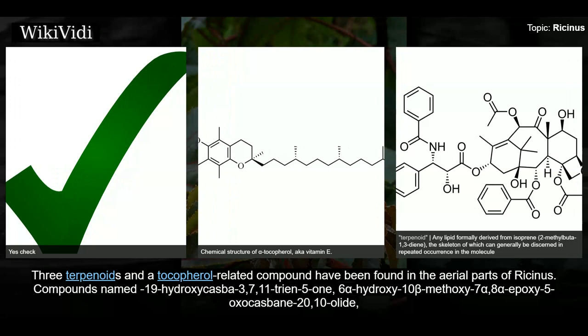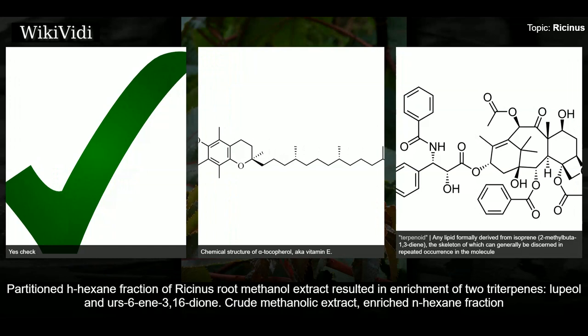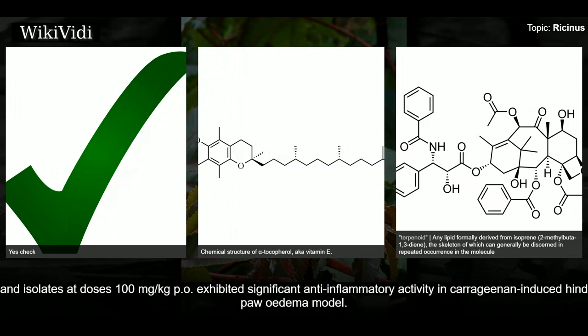Three terpenoids and a tocopherol-related compound have been found in the aerial parts of Ricinus. Various named compounds were isolated from the methanol extracts of Ricinus communis by chromatographic methods. Partitioned n-hexane fraction of Ricinus root methanol extract resulted in enrichment of two triterpenes, lupeol and urs-6-en-3,16-dione. The crude methanol extract enriched n-hexane fraction and isolates at doses of 100 mg/kg orally exhibited significant anti-inflammatory activity in a carrageenan-induced hind paw edema model.